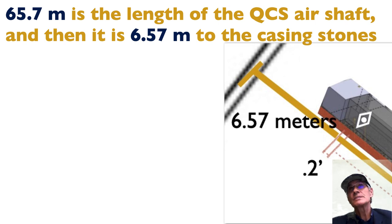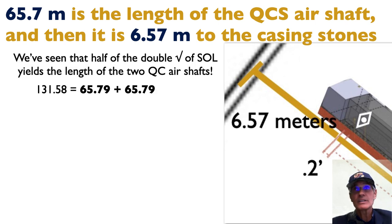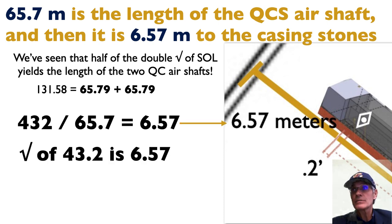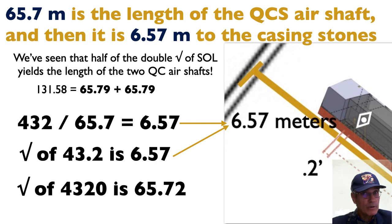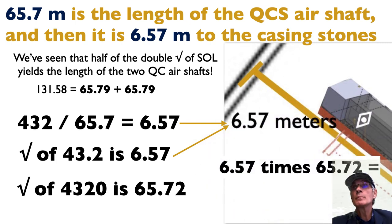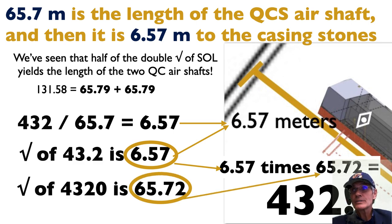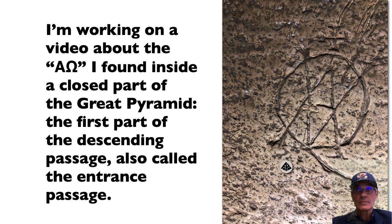So 65.7 is the length of the Queen's Chamber air shaft, 6.57 to the casing stones. We've seen that. 432 divided by 65.7 is the length to the outside of the pyramid. Square root of 432 is 6.57, which is just a repeat of what I said. The square root of 4320 is 65.72. Unbelievable. 6.57 times 65.72 is, okay, those are the fractal roots of 432. Incredible. So I'm working on a video now about the alpha and omega I found inside a closed part of the Great Pyramid, so stay tuned for that. Thanks for watching.